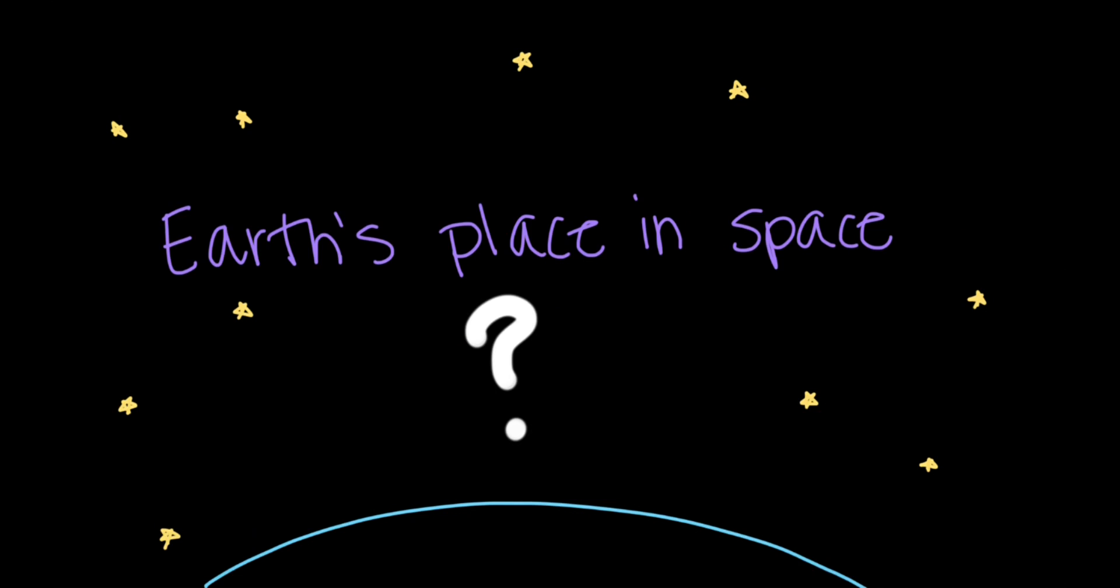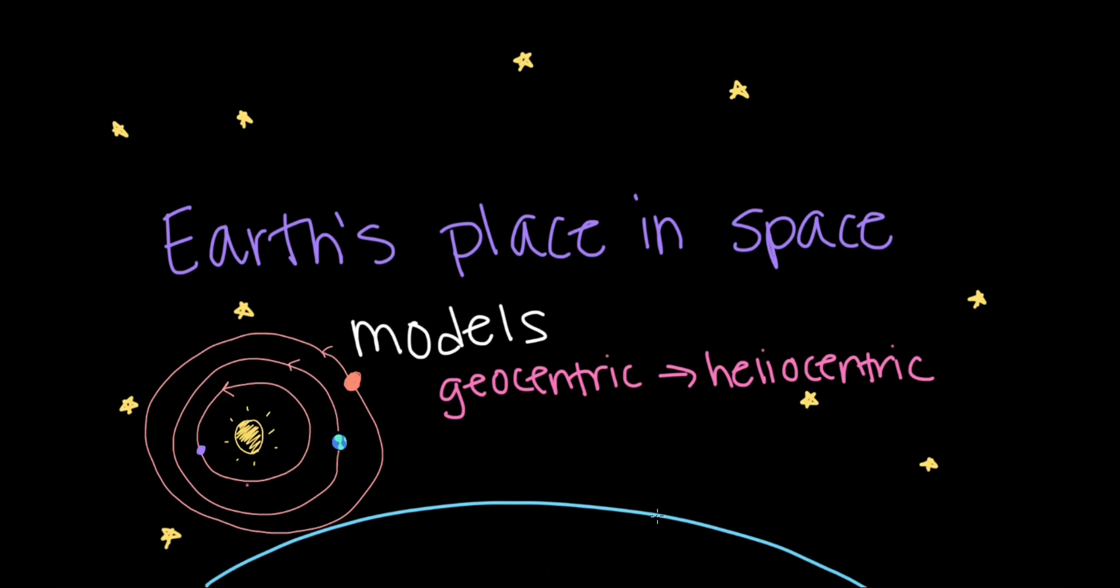To summarize, in this video we talked about how we can use models to help us understand what we see in the sky and Earth's place in space. As we learn more, we improve our models and develop new ones that do a better job of explaining our observations and predicting the world around us, such as the change from a geocentric model to a heliocentric model. The Earth is a planet that orbits the Sun, like the other planets of the solar system, and the Sun appears to move across the sky because the Earth spins on its axis.